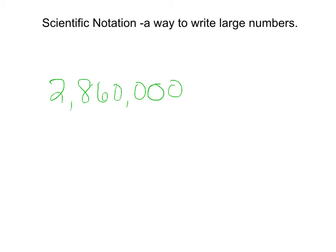Scientific notation is a way to write large numbers. If we take a look at this number right here, 2,860,000, we can write that in scientific notation.